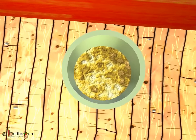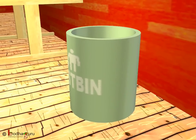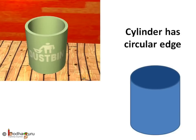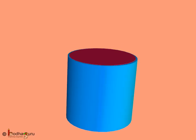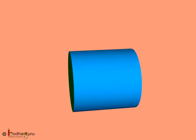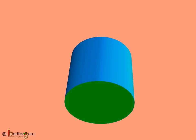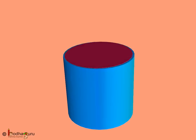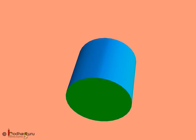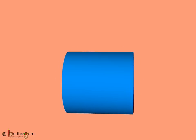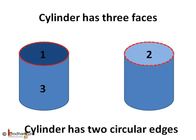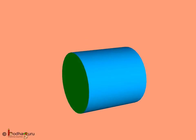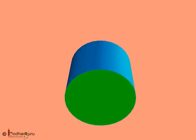Now coming to the dustbin. If we look at the base of this dustbin, it is circular like the base of a birthday hat. But the shape of the birthday hat and the dustbin are not the same. This is a cylinder. The shape of this dustbin is cylindrical. The 2D circle can be a face of a cylinder too. So how many faces does a cylinder have? One, two — two circular faces are there, and the whole curved surface is one surface. So in total three faces. The cylinder has two circular edges where the two circular faces meet the rest of the surface.